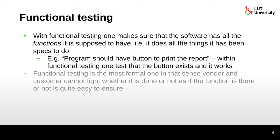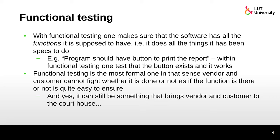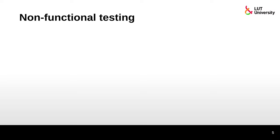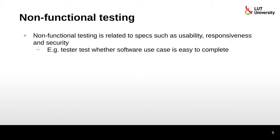For example, if the spec says the program should have a button to print a report, functional testing verifies there is a button and it really works — pressing it produces a printed report. Functional testing is the most formal type; you can specify which functions should be there, and if they are not, the customer knows that function hasn't been developed. It's pretty much yes or no, and can even be argued in a courthouse between customer and vendor. Non-functional testing is related to specs such as usability, responsiveness, and security.